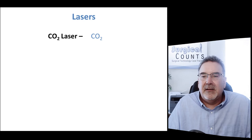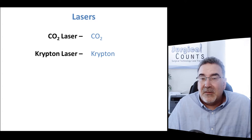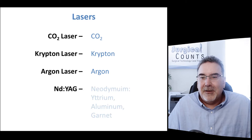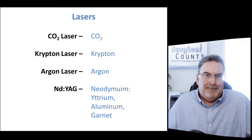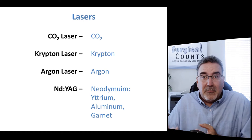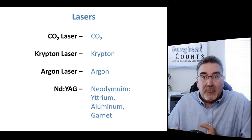Tricky question: what do we put inside a krypton laser? That would be krypton. What about an argon laser? Argon. And an ND-YAG laser? That's neodymium, yttrium, aluminum, and garnet crystals — worth writing down. Lasers are usually named after whatever material goes inside them to create the light. The reason we have different materials in different lasers is because different materials create different colors of light.